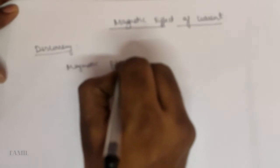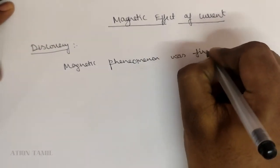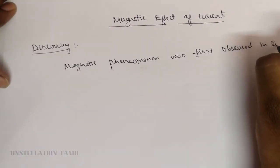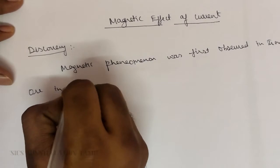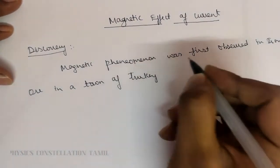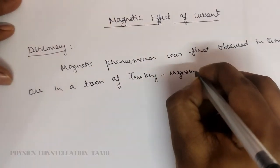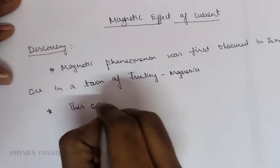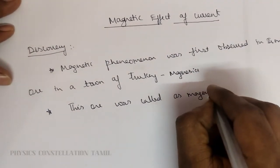Magnetic phenomenon was first observed in an iron ore in a town of Turkey called Magnesia. This ore was called magnetite.